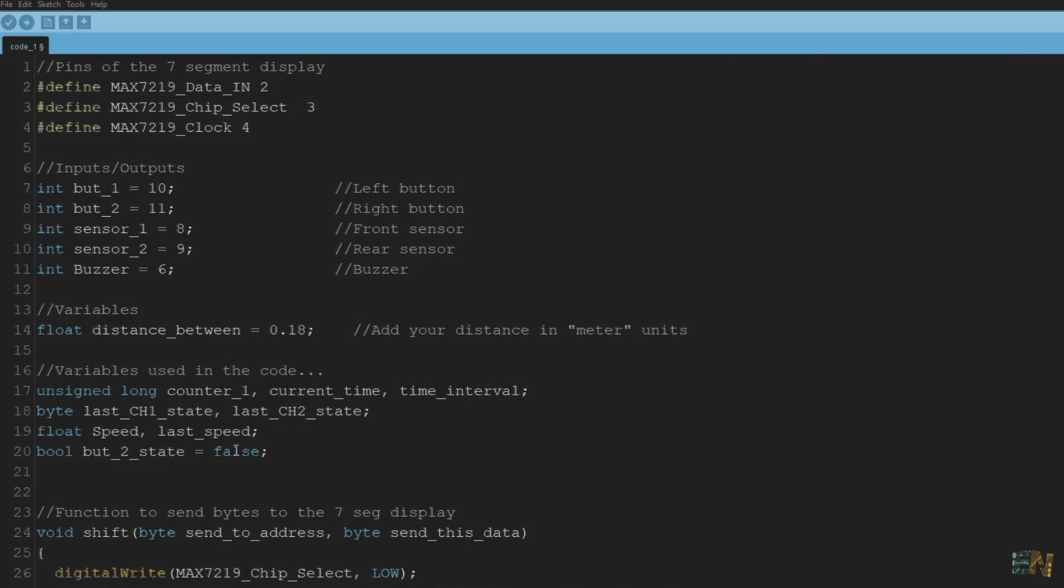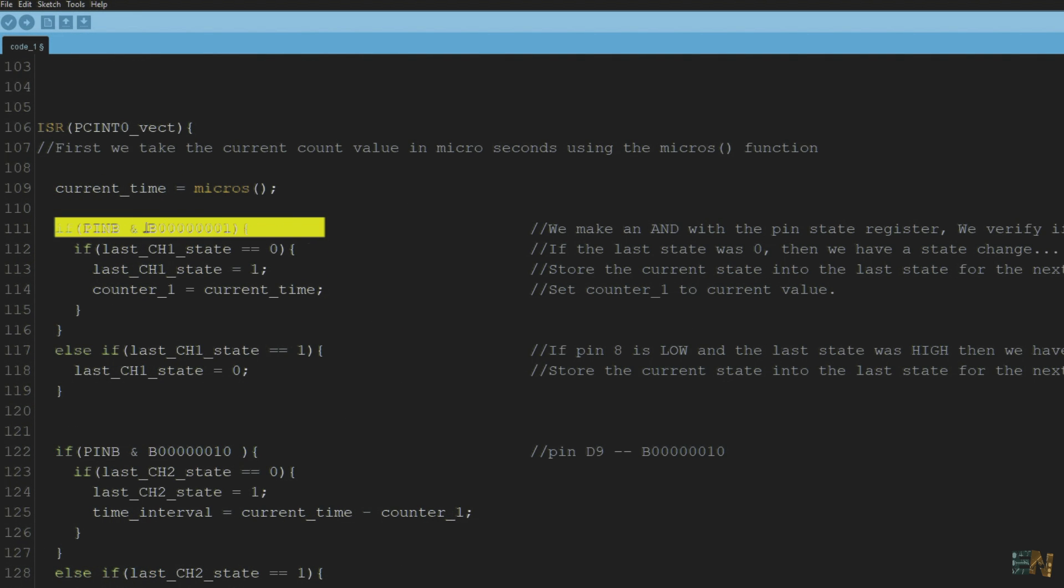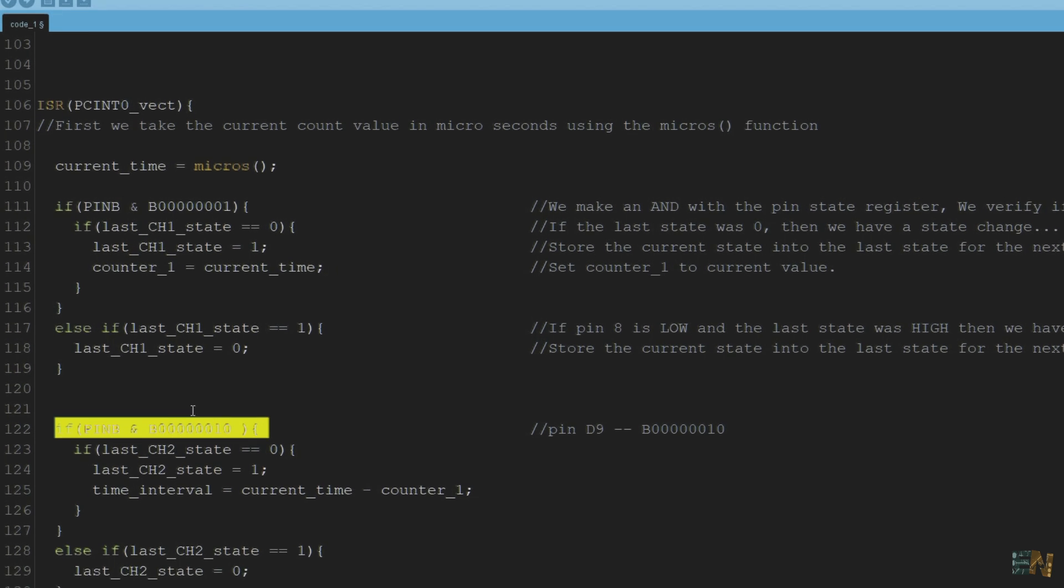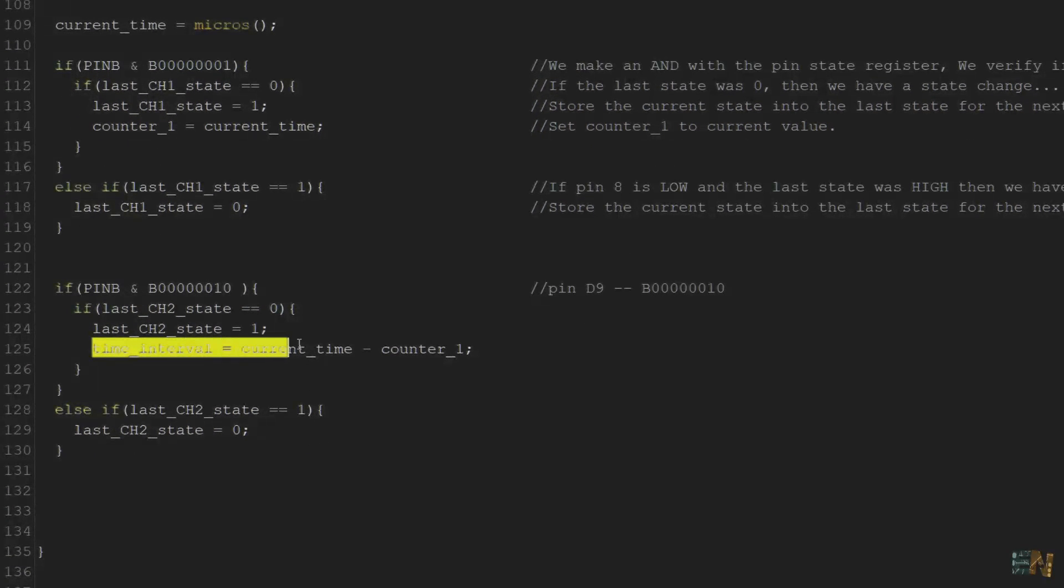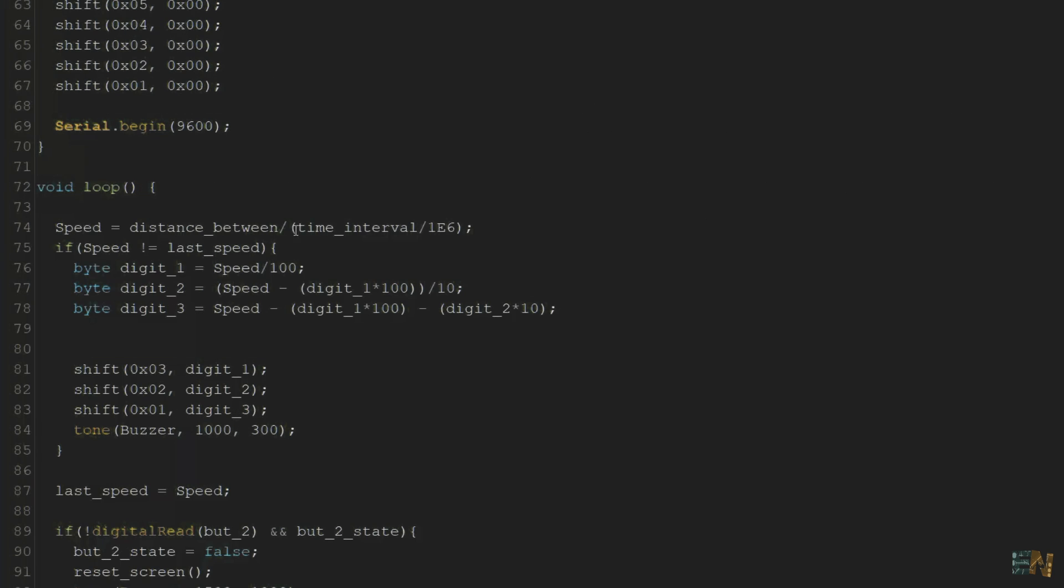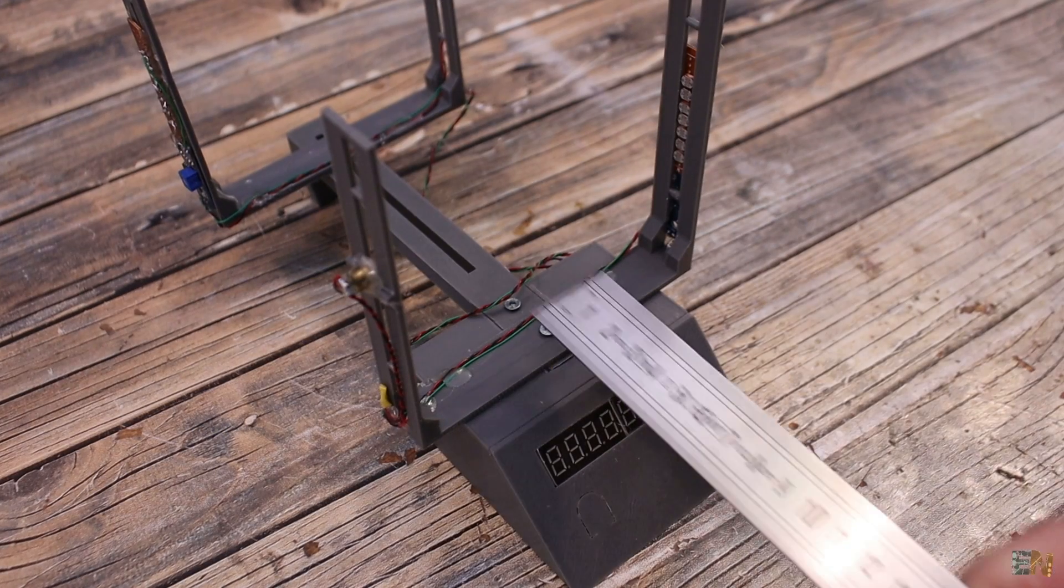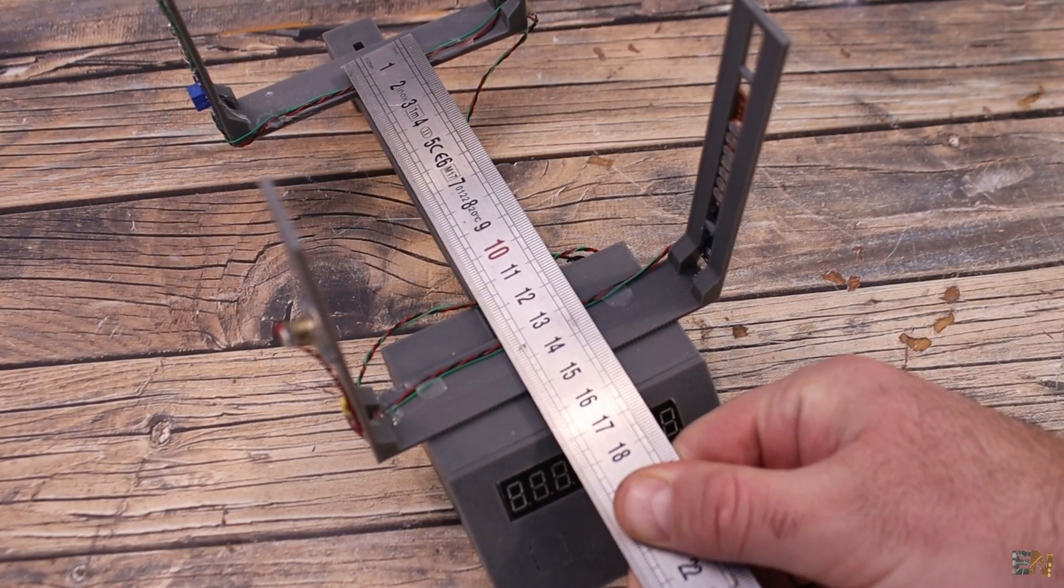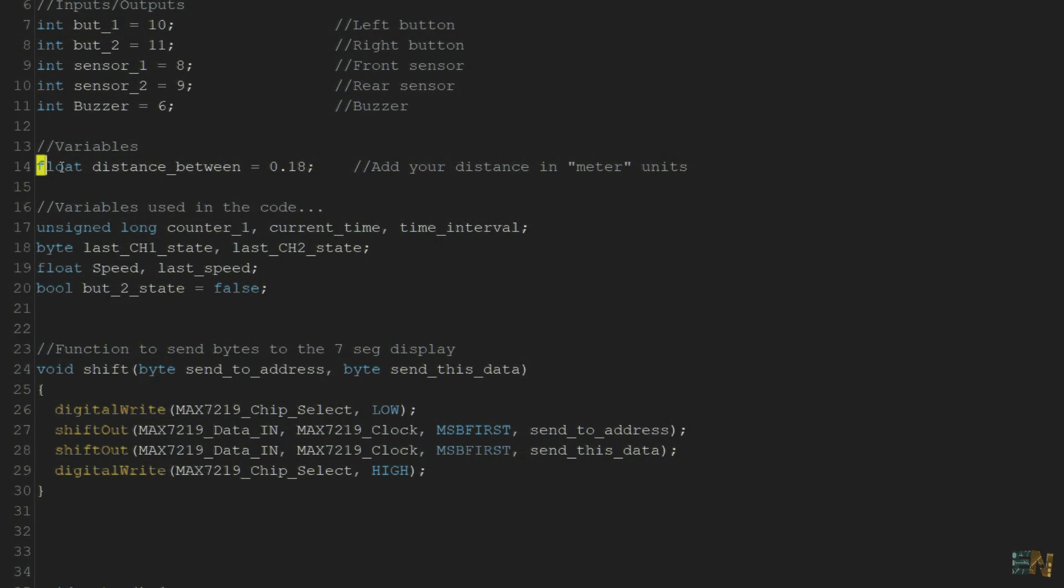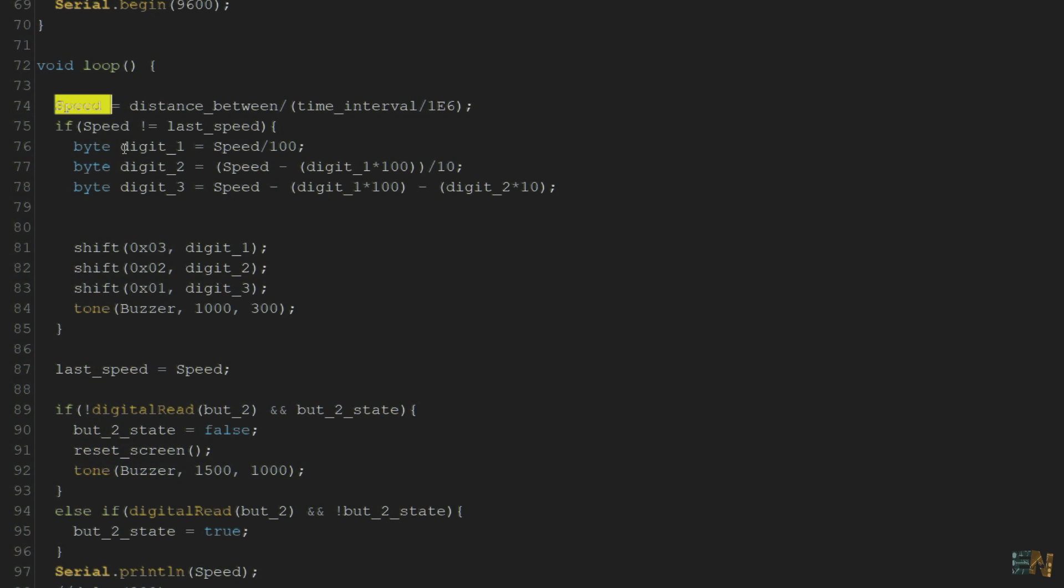If we take a look at the code, we can see that we have the sensor pins defined on pin 8 and pin 9. So using interruptions, we detect when the first sensor is triggered and then we save the time value. Then we detect the second sensor and we equal the time to the difference between the actual time and the previous time. That will be in microseconds so we divide it by 1 million to get seconds. Then we divide the distance between the sensors by that value. By the way, you should manually measure the distance between the sensors with a ruler. Then you get here in the code and change that value according to your distance. We get the speed and divide that into digits and print those to the 7 segment display. That's it for the code.